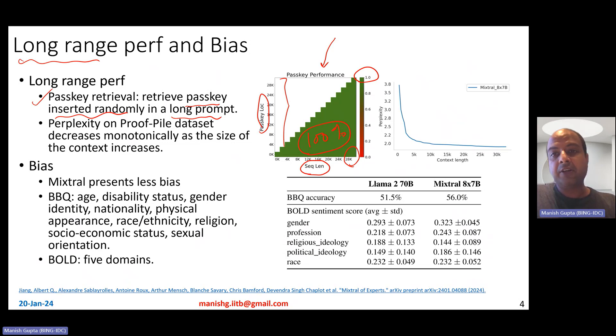Another proof of Mixtral's long-range performance is perplexity as measured on the proof-pile data set. So this proof-pile data set with long context lengths, and what they observe is that with increased context length, actually perplexity drops, which is an indicator that it can actually handle long inputs really well. And lower perplexity is better.